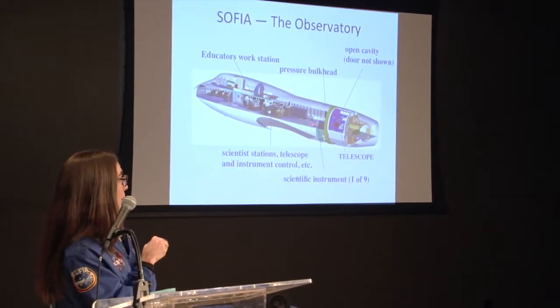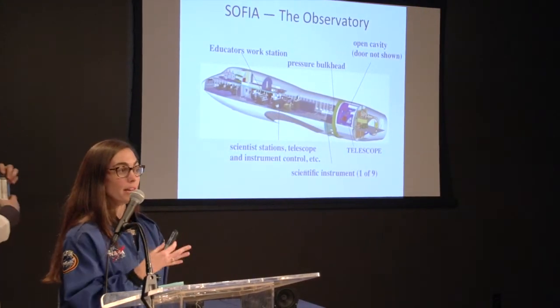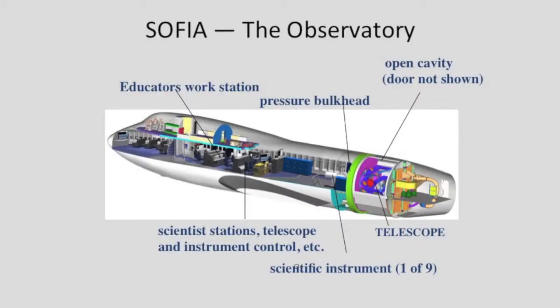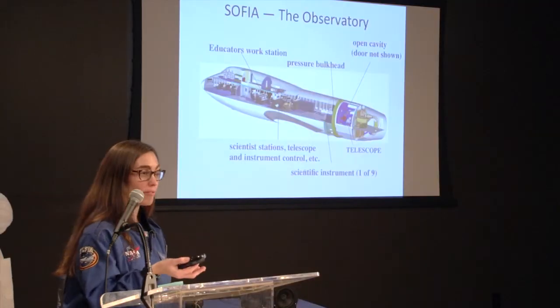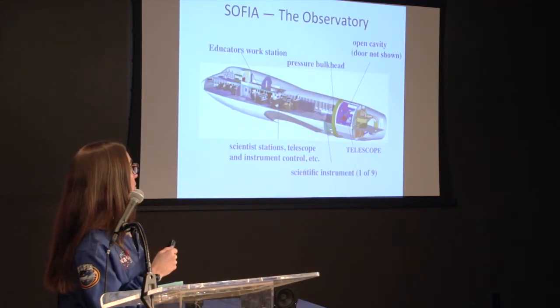Next, there's a pretty big gap and there's actually a rope you cannot cross while the flight is in motion — that is to secure the telescope. You can see part of the telescope and the instrument here. There's an airtight wall, and then this is the cavity of the telescope. So we're safe while we're up there, but that gives you a little bit of the interior of the airplane.